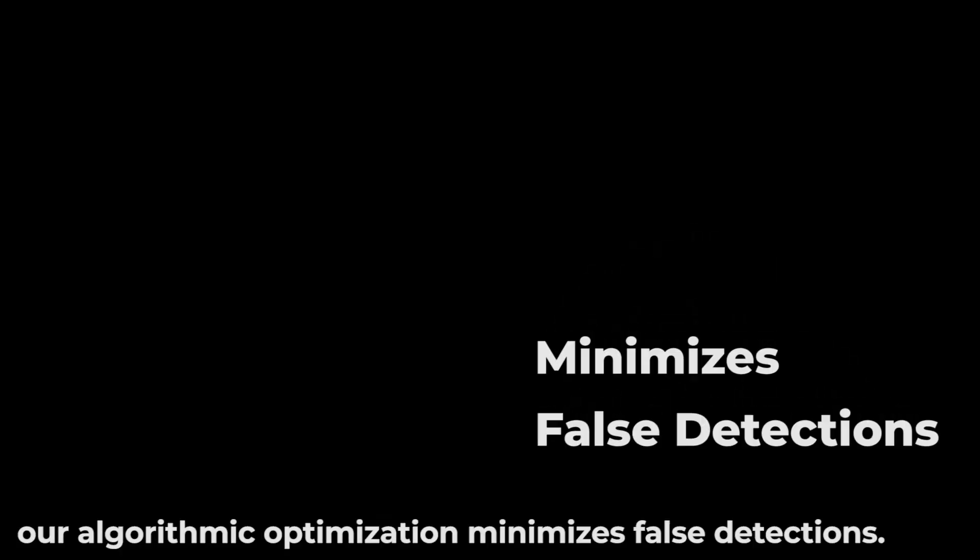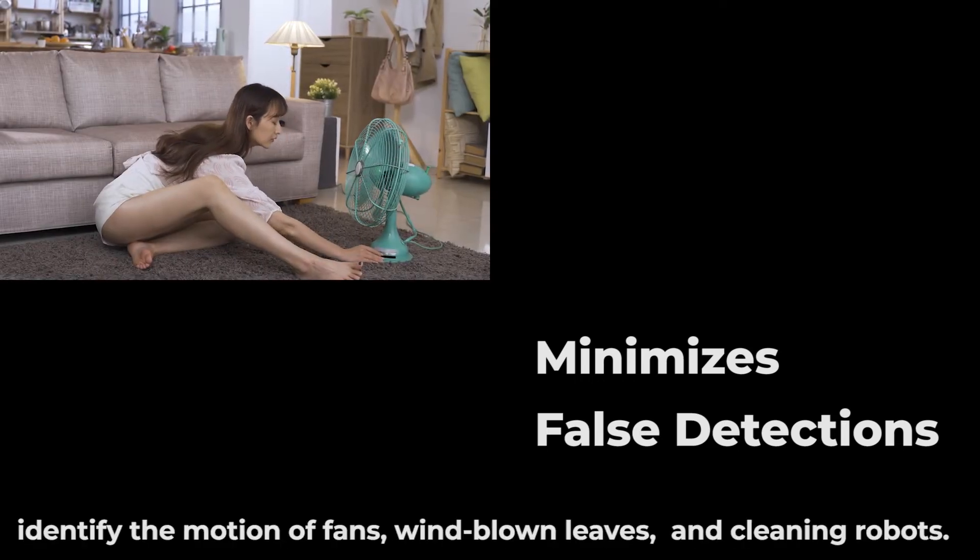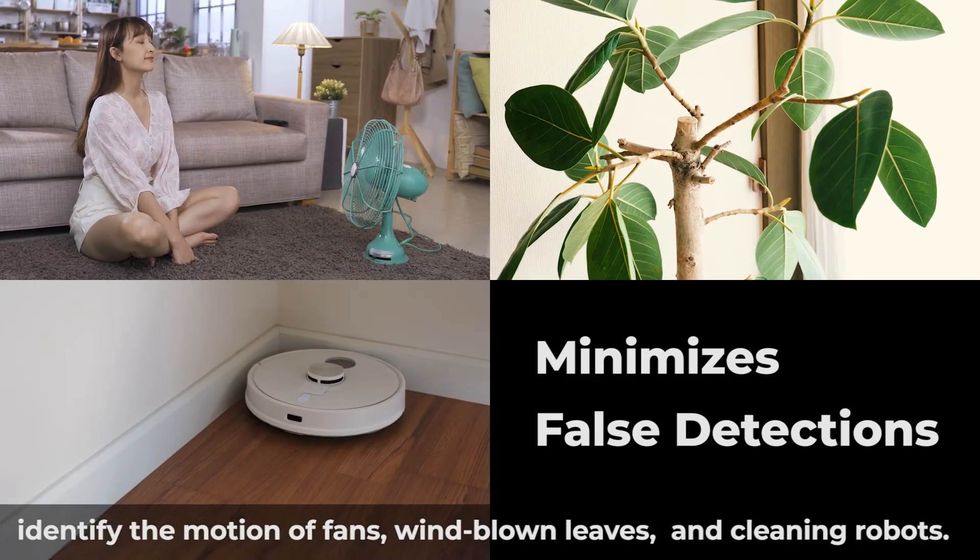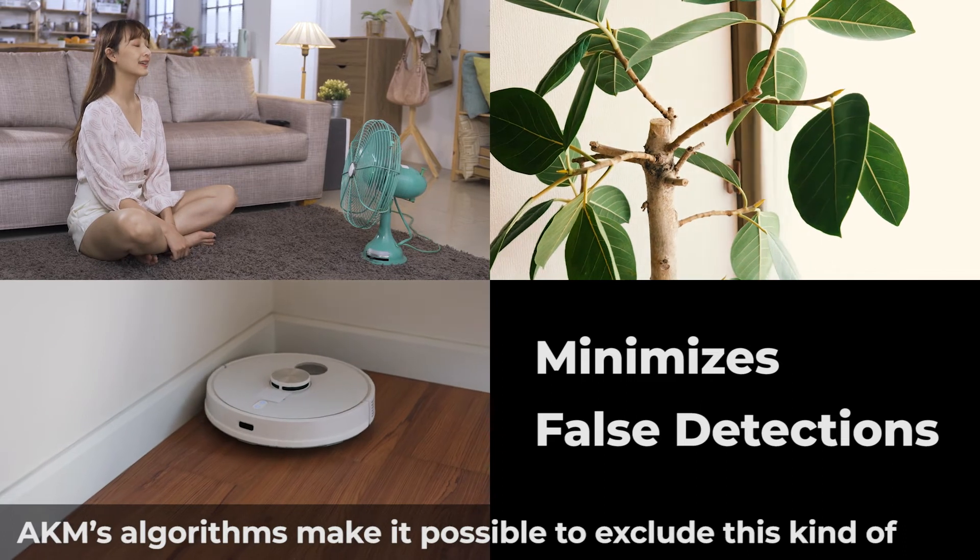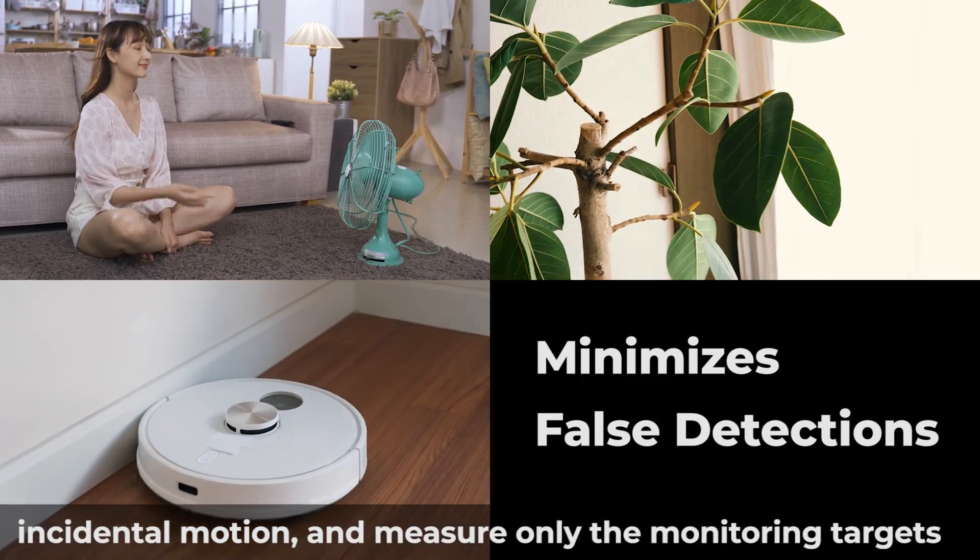Even more importantly, our algorithmic optimization minimizes false detections. Millimeter wave radar modules are sensitive enough to identify the motions of fans, wind-blown leaves, and cleaning robots. AKM's algorithms make it possible to exclude this kind of incidental motion and measure only the monitoring targets of interest.